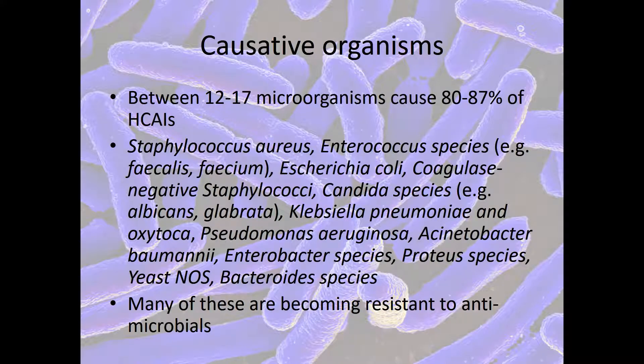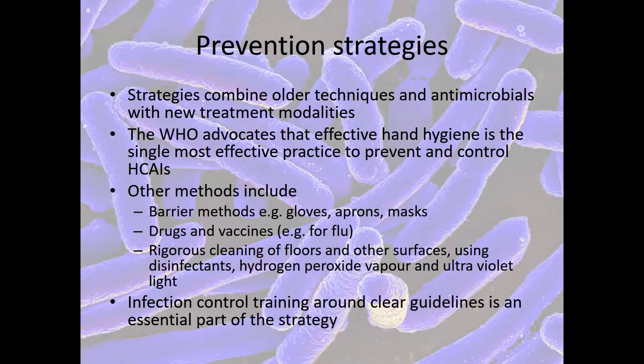Around the world, there are about 12 to 17 microorganisms which cause around 80 to 87% of healthcare-associated infections. These are listed on the slide. They are common microorganisms — some found on the skin, such as E. coli and Staphylococcus. These organisms are very prevalent, but many are starting to become resistant to antimicrobials, which is one of the key issues around having a clear prevention and control strategy.